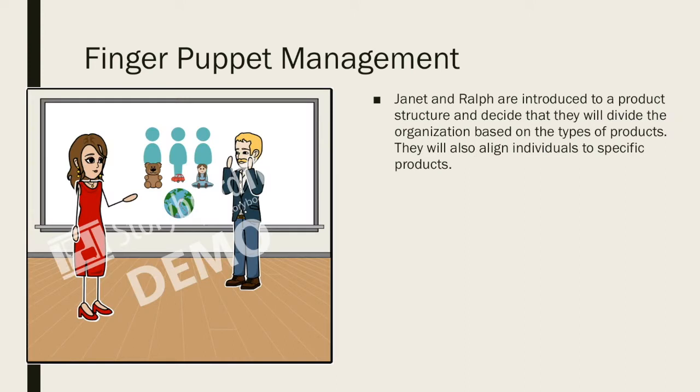Janet and Ralph are introduced to a product structure and decide that they will divide the organization based on the types of products. They will also align individuals to those specific products.